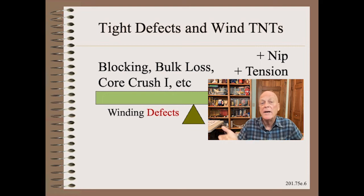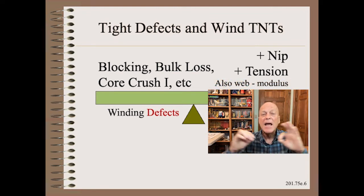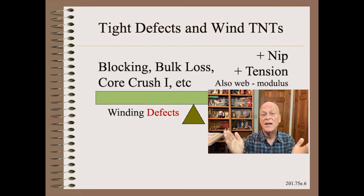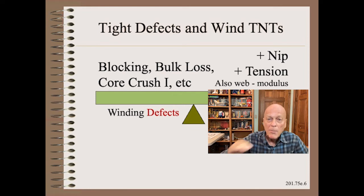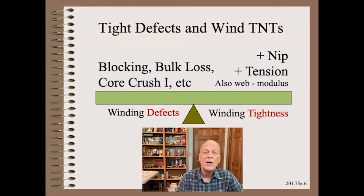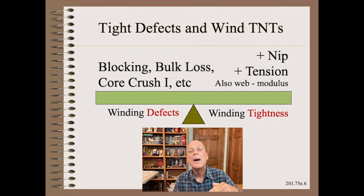However, winders are not the only thing that determines inner layer pressure. The web's MD modulus also has at least as strong of effect as all of the winder knobs put together. Thus, if you wanted to decrease tension to reduce web breaks in the presence of bulk loss, then you would need to compensate by increasing nip.